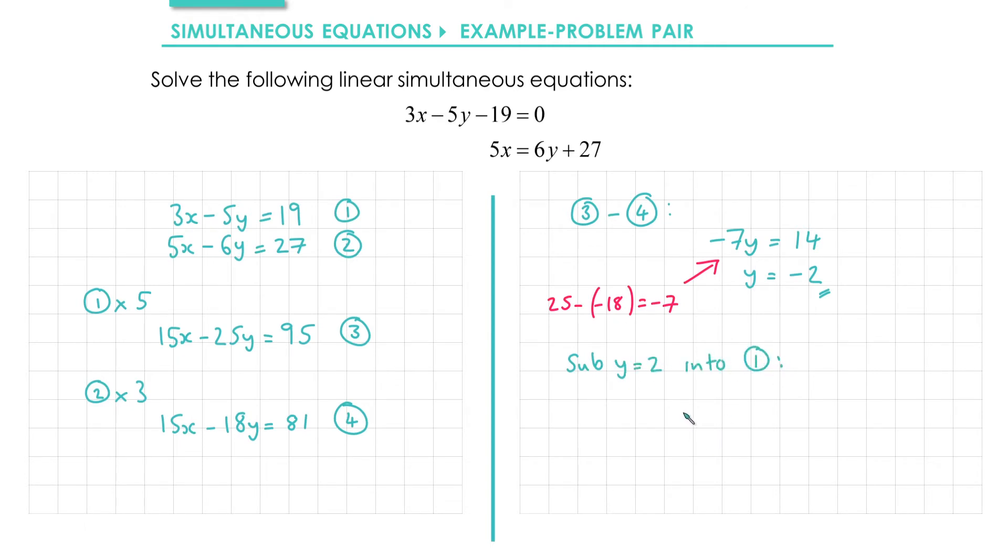So substituting into 1, I get 3x minus 5y, which becomes 5 times minus 2, equals 19. Negative 5 times negative 2 is positive 10, but then I'm going to subtract that from both sides to leave me with 3x equals 9, and dividing by 3 gives me x equals 3. So my solution here is y equals minus 2 and x equals 3.